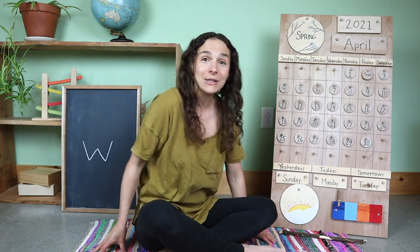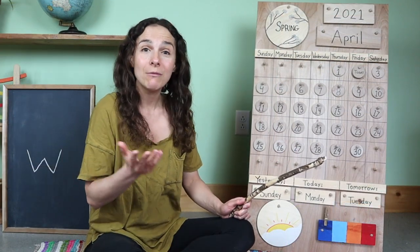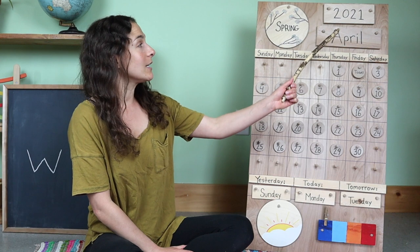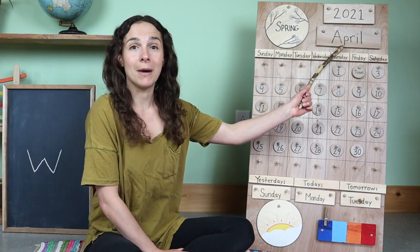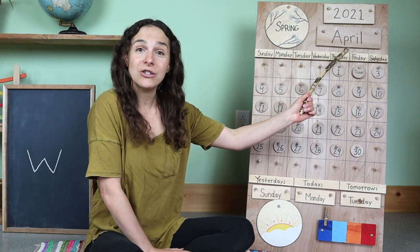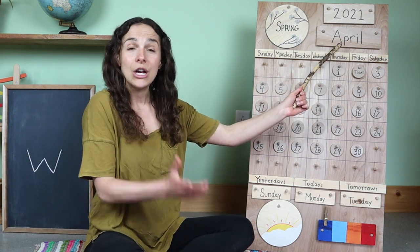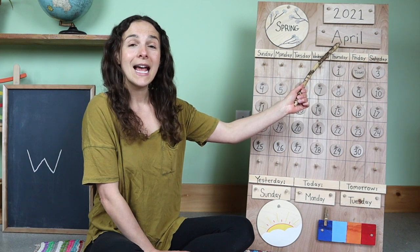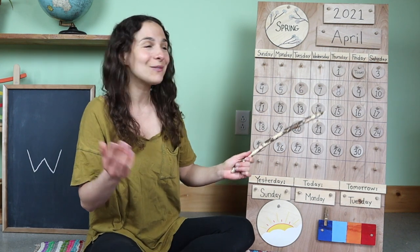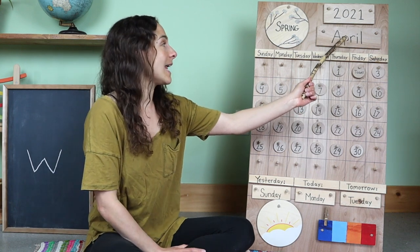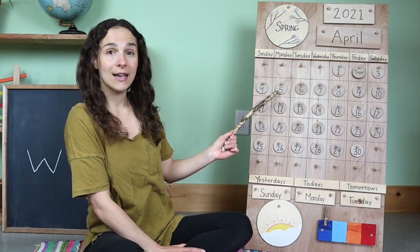I hope that you all had a wonderful day so far. Let's get started with circle time. The first thing that we do is begin with the date. And when we say the date, we start off at the top with the month. The month is right up here. And recently we started a brand new month. Do you know what the new month is? April. That's right. The month is April. And today is April 5th.